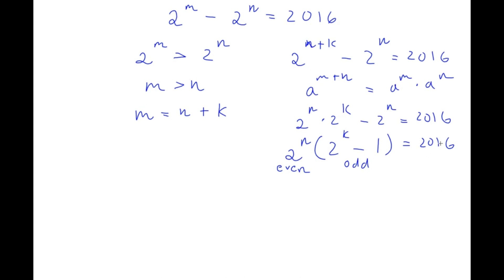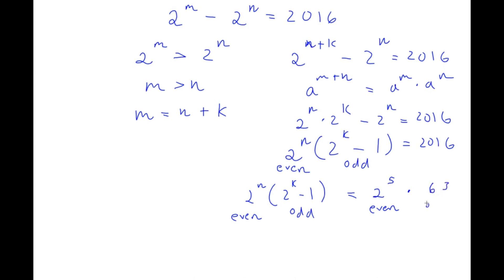Meaning we need to rewrite 2016 in the form of an even number times an odd number. So this will be equal to 2 to the power of n times 2 to the power of k minus 1, where 2 to the power of n is even and 2 to the power of k minus 1 is odd. And this is equal to 2 to the power of 5 times 63, which is odd. Now 2 to the power of 5 is 32, times 63 equals 2016, so I simply wrote 2016 as 2 to the power of 5 times 63.